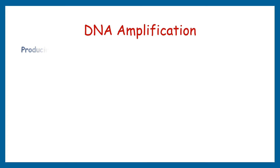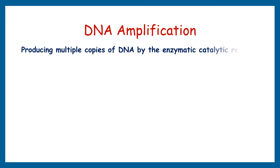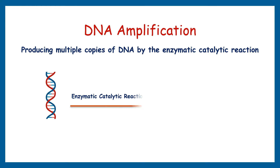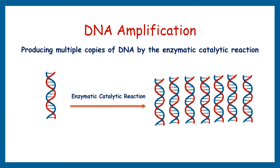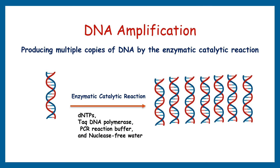Producing multiple copies of DNA by an enzymatic catalytic reaction is known as DNA amplification. In a PCR reaction, the enzyme used is Taq DNA polymerase, and we also need other ingredients like PCR reaction buffer, dNTPs, nuclease-free water, and importantly the template DNA which we want to amplify. This is a very complex method, and that's why it needs optimization at every level.